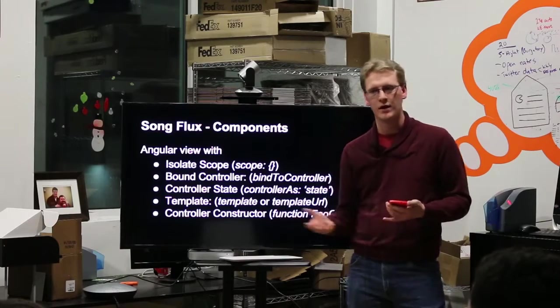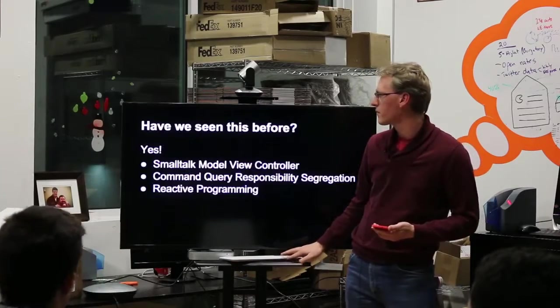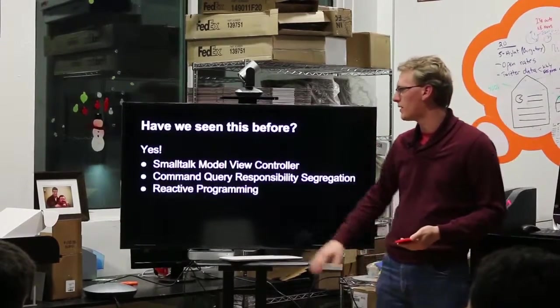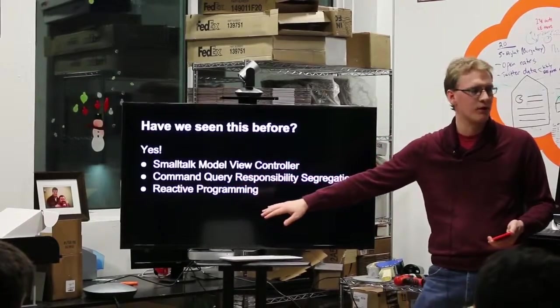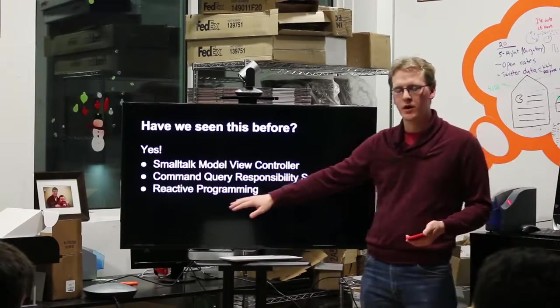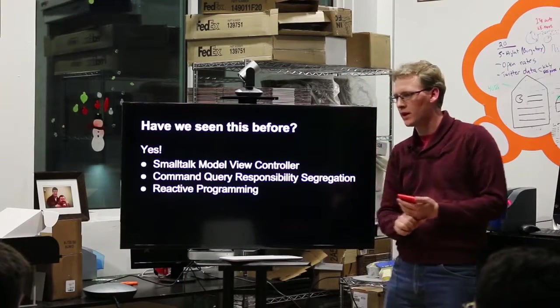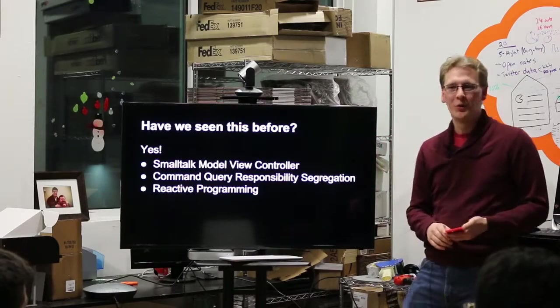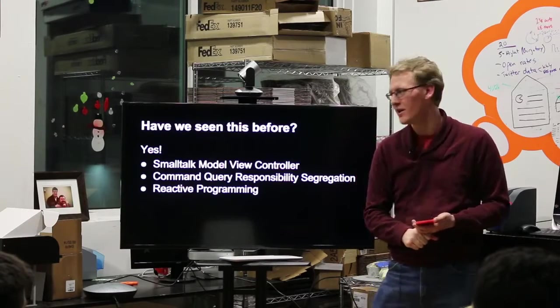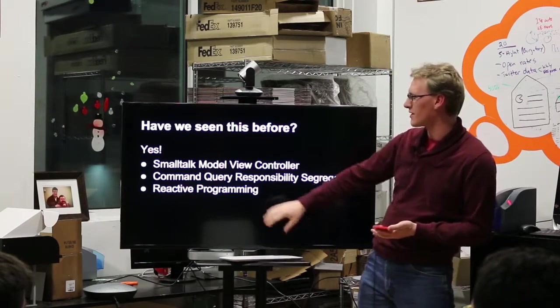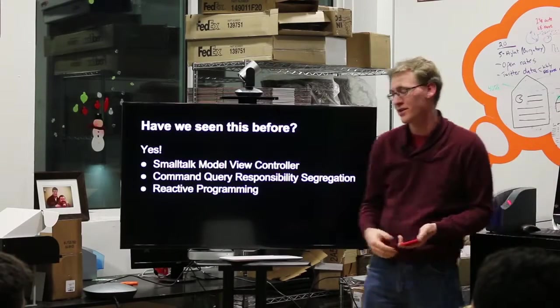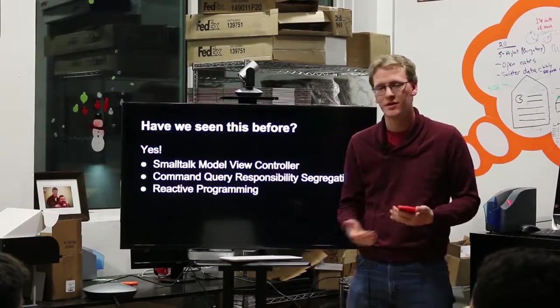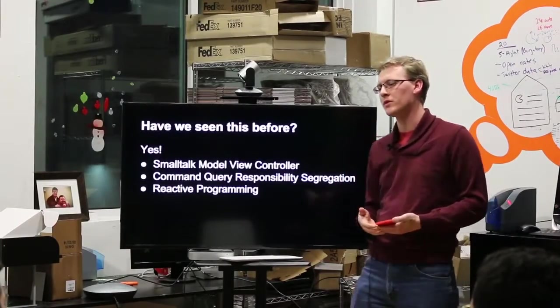We've seen all this before. We really have. This is just another way to do the Smalltalk model view controller, back when every arrow was one direction. Two-way data binding is really strong. It's really powerful. It's almost too powerful for what we're capable of handling on large teams where you start getting a lot of churn. A lot of people online will say, that's just CQRS. It's just PubSub. It's just another way to do it.